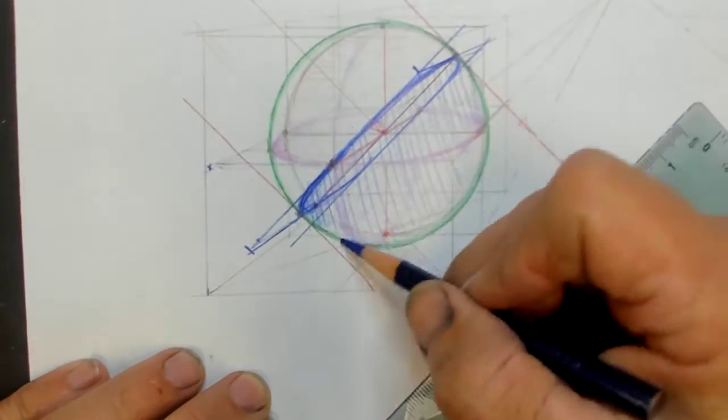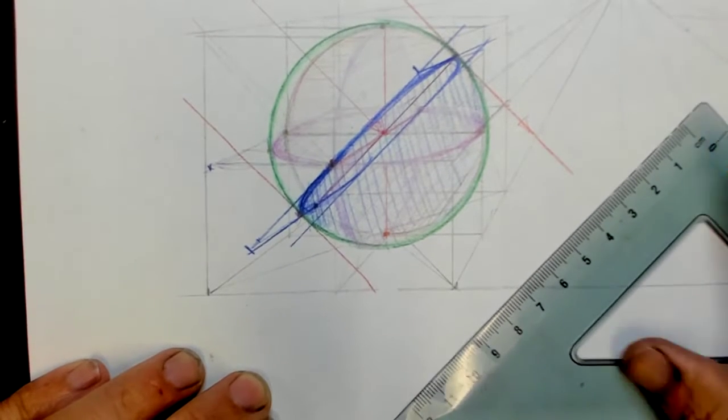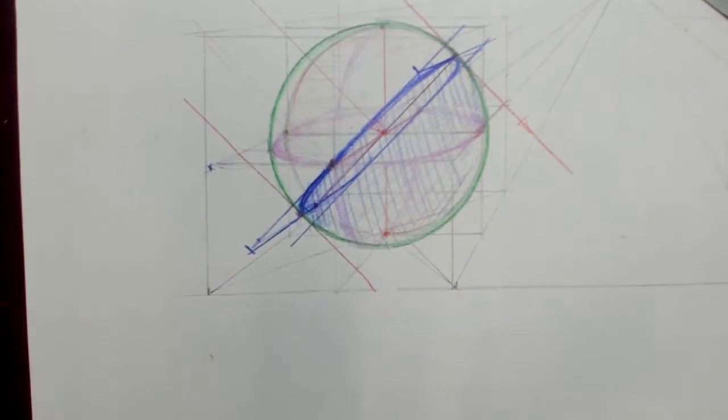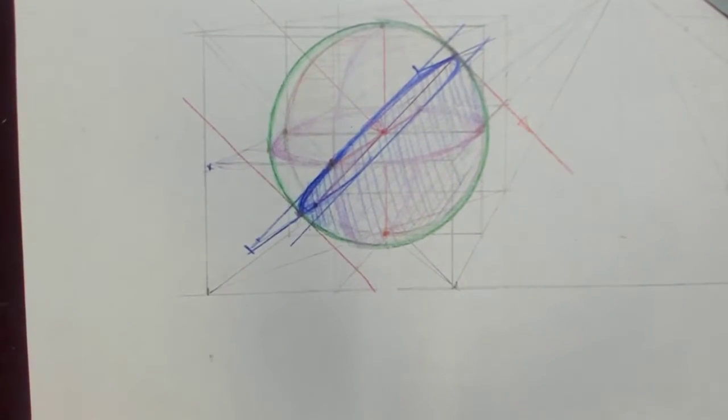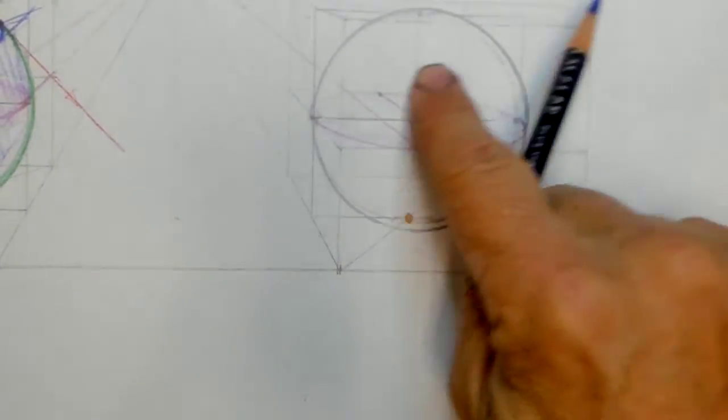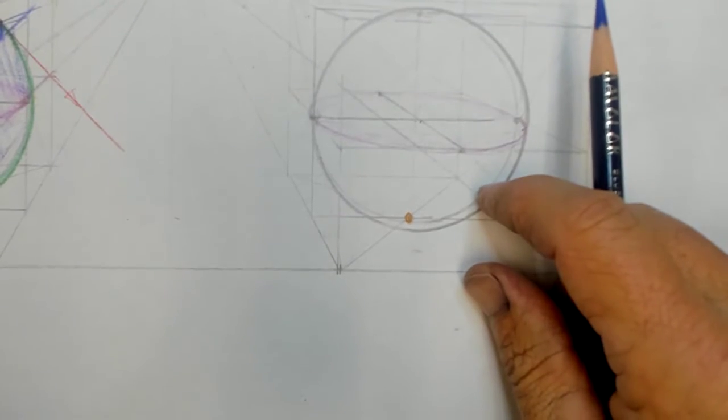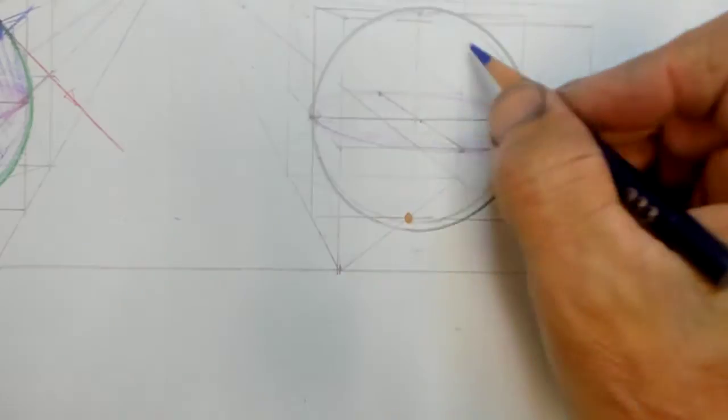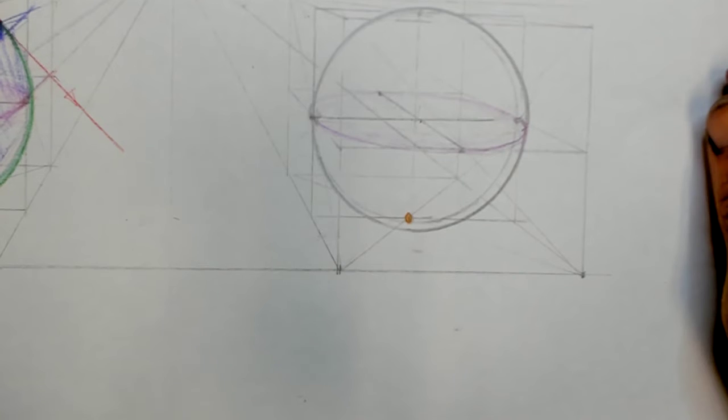But we still haven't done the cast shadow of this sphere. So we have to do that next. And then maybe we'll do one for this guy too. This is going to be the same thing. I might just save some time and do this one all over again and have them both for you.